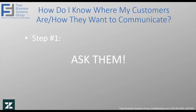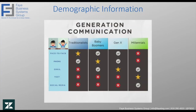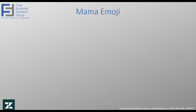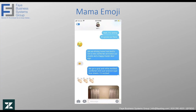You can store the information of what a customer's preferred method of communication is inside your CRM so that everybody can see it. This is also great for when a problem arises — you know how to communicate with them to get the quickest response. There is some demographic information that can give you a gauge of how people may like to communicate, but it's just a reference — not every single person in a generation will have that preference. For instance, my mother is a baby boomer, but she loves text messaging and hates talking on the phone. You just never know, and you don't want to make assumptions about how someone wants to communicate.